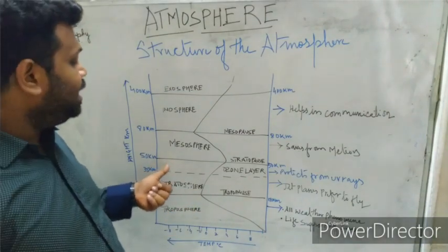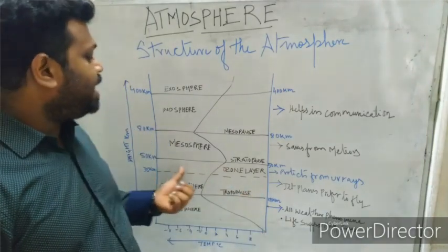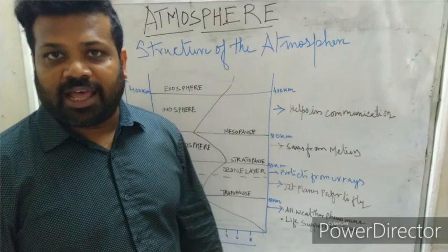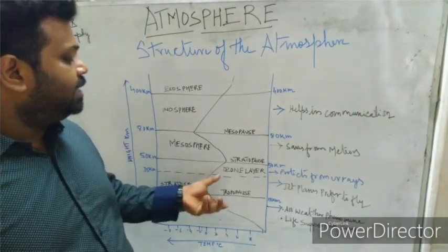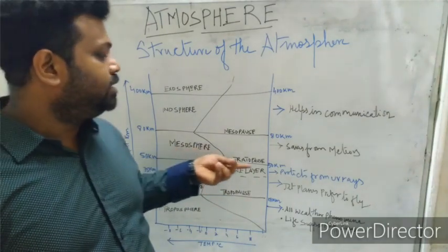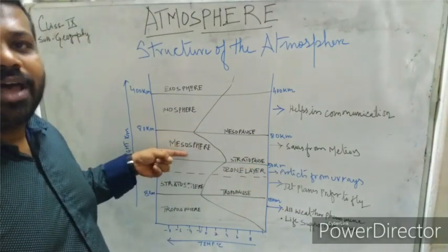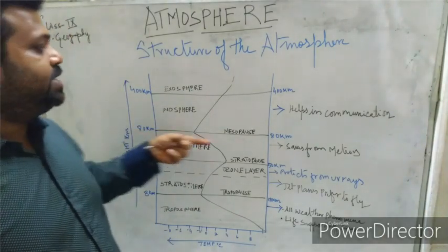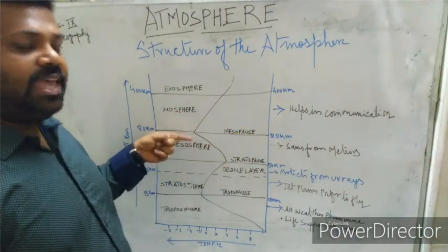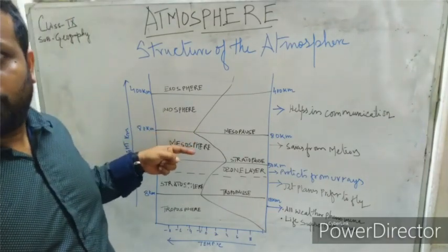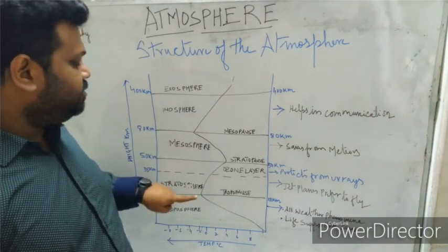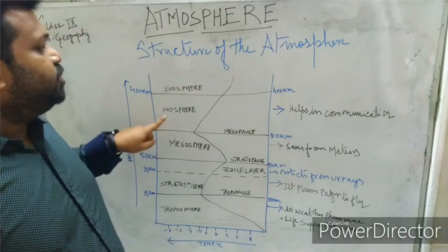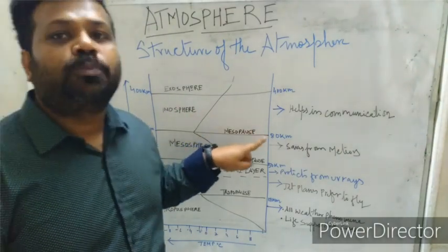Within the stratosphere there is a layer called the ozone layer, which has the maximum concentration of ozone gas. This ozone gas protects us from the ultraviolet rays of the sun. The boundary where the stratosphere ends is called the stratopause. Next is the mesosphere, which extends up to 80 km. In the mesosphere, temperature starts to decrease again and it is the coldest layer. Unlike the stratosphere where temperature increases with height, in the mesosphere temperature decreases again.